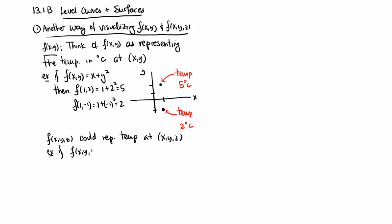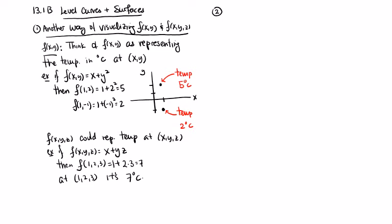For example, if f(x,y,z) = x + y·z, then f(1,2,3) = 1 + 2×3 = 7, so at the point (1,2,3) it's 7 degrees. It's a different way of thinking about it. I wanted to introduce this because it will also help us understand level curves and surfaces.